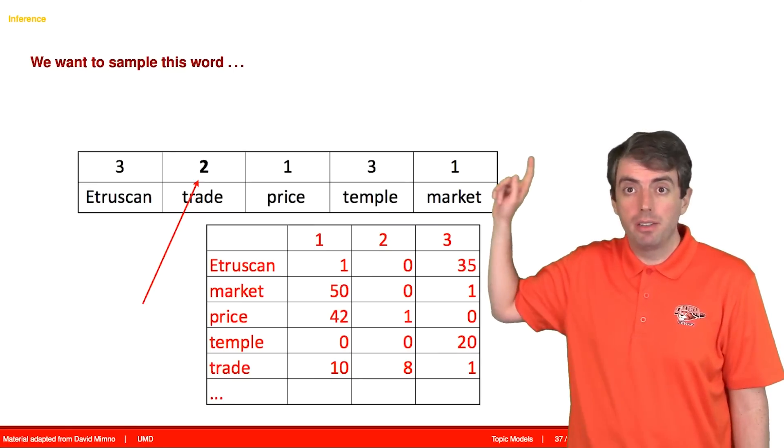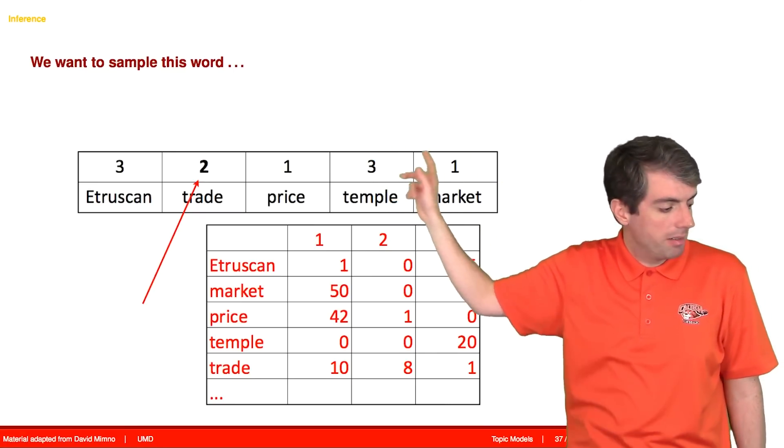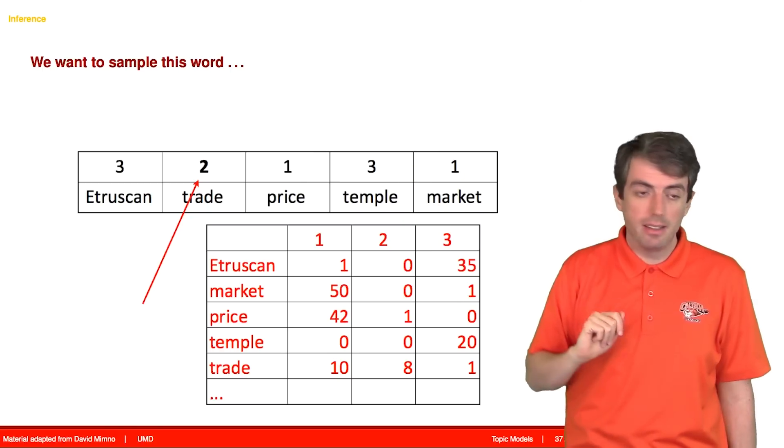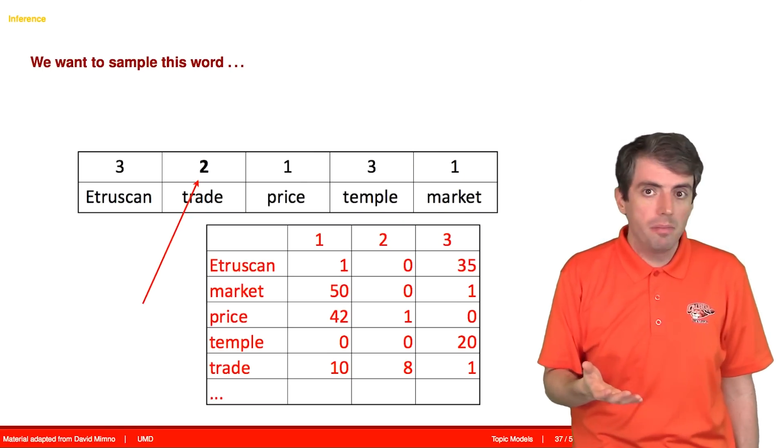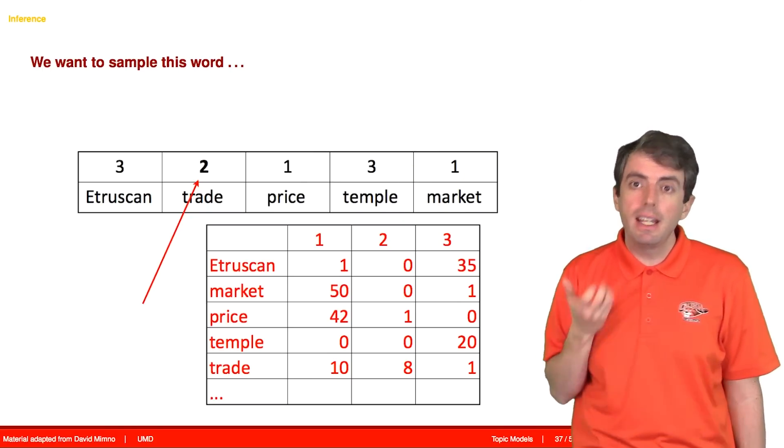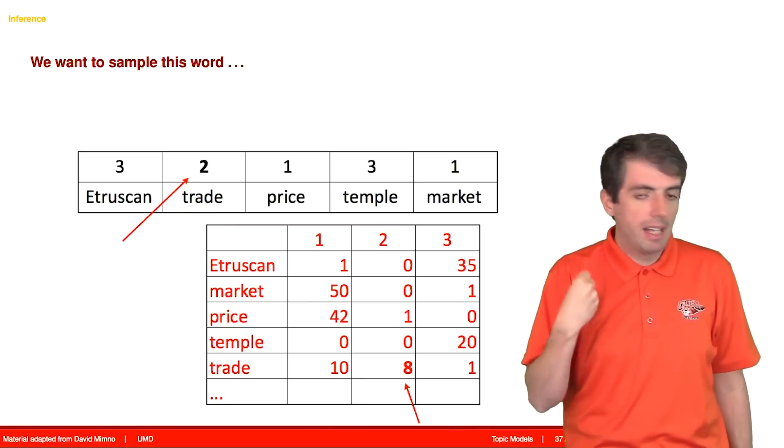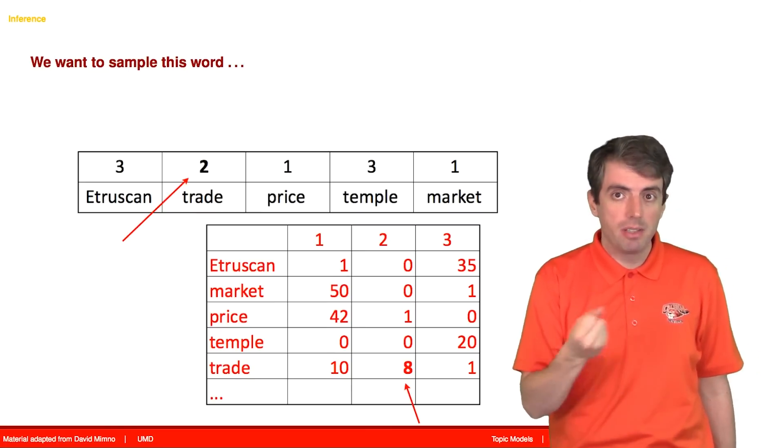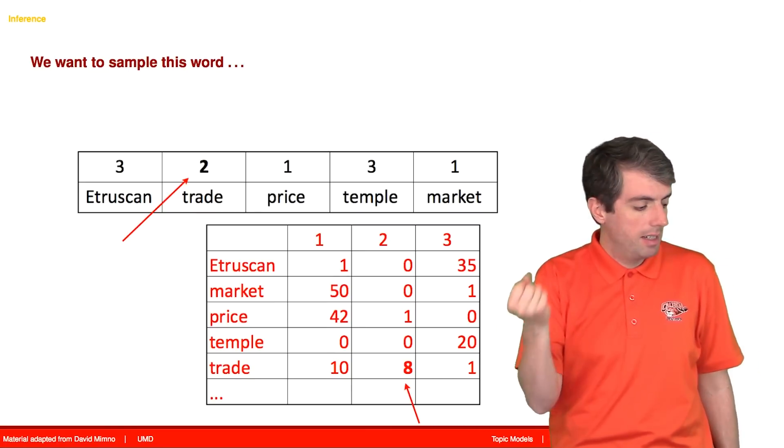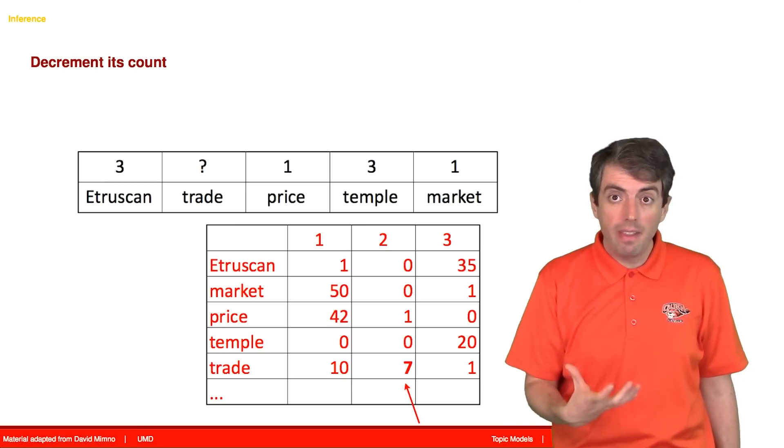Now let's say that we want to update the assignment for the word trade in this document. It was assigned to topic 2. We're now going to take that away. We're going to pretend we don't know what the topic assignment was. And so now the count for trade in topic 2 is going to go from 8 down to 7.